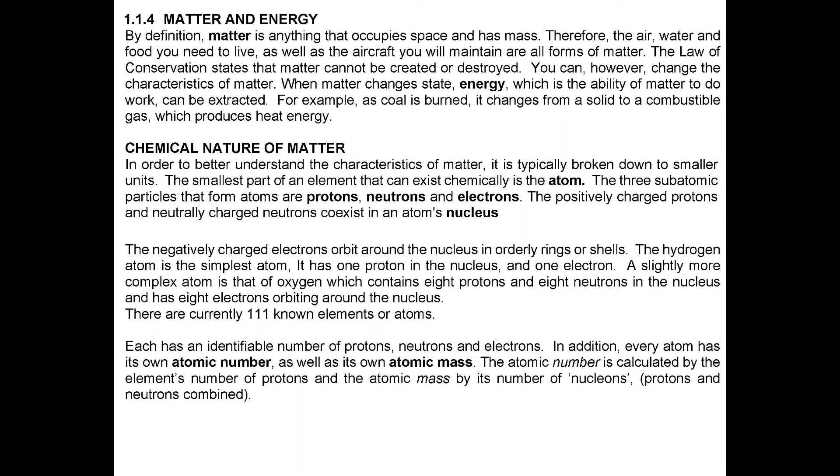The positively charged protons and neutrally charged neutrons coexist in an atom's nucleus. The negatively charged electrons orbit around the nucleus in orderly rings or shells. The hydrogen atom is the simplest atom. It has one proton in the nucleus, and one electron. A slightly more complex atom is that of oxygen which contains eight protons and eight neutrons in the nucleus and has eight electrons orbiting around the nucleus.